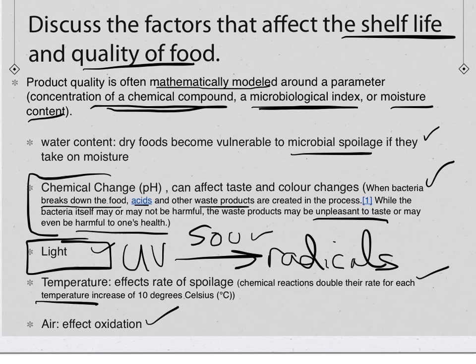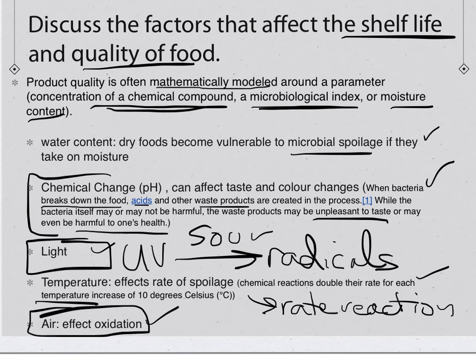Temperature also affects shelf life — think of it like rate of reaction. The warmer a product is, the faster molecules move, the faster chemical reactions proceed, and the faster microbial spoilage and bacterial growth occur. Finally, access to air and oxygen is a concern because oxygen oxidizes food compounds. So: water content, chemical change, light, temperature, air, and oxidation are all key factors.